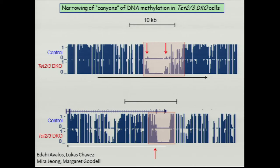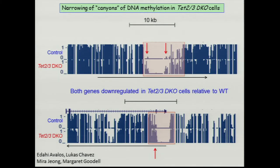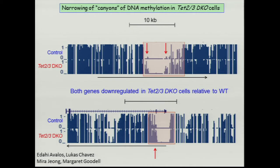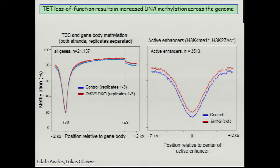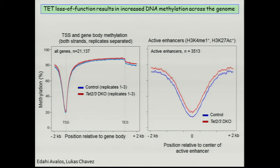Both of these genes are downregulated in TET knockout cells relative to wild type. The promoter regions of both genes are present within the valleys. One could look at this handful of genes showing this behavior and say we've shown methylation-associated gene expression changes that explain the phenotype. However, if you look at the whole genome level, the changes are really mild. Across the genome you see an increase in methylation, but it's not very striking at the average level, and that's also true for active enhancers.